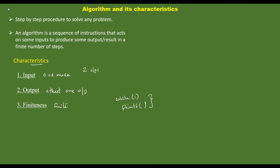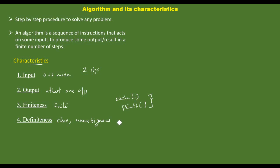Next characteristic: definiteness. The algorithm should be clear and unambiguous — having only one interpretation or meaning. All instructions in the algorithm should be clear.